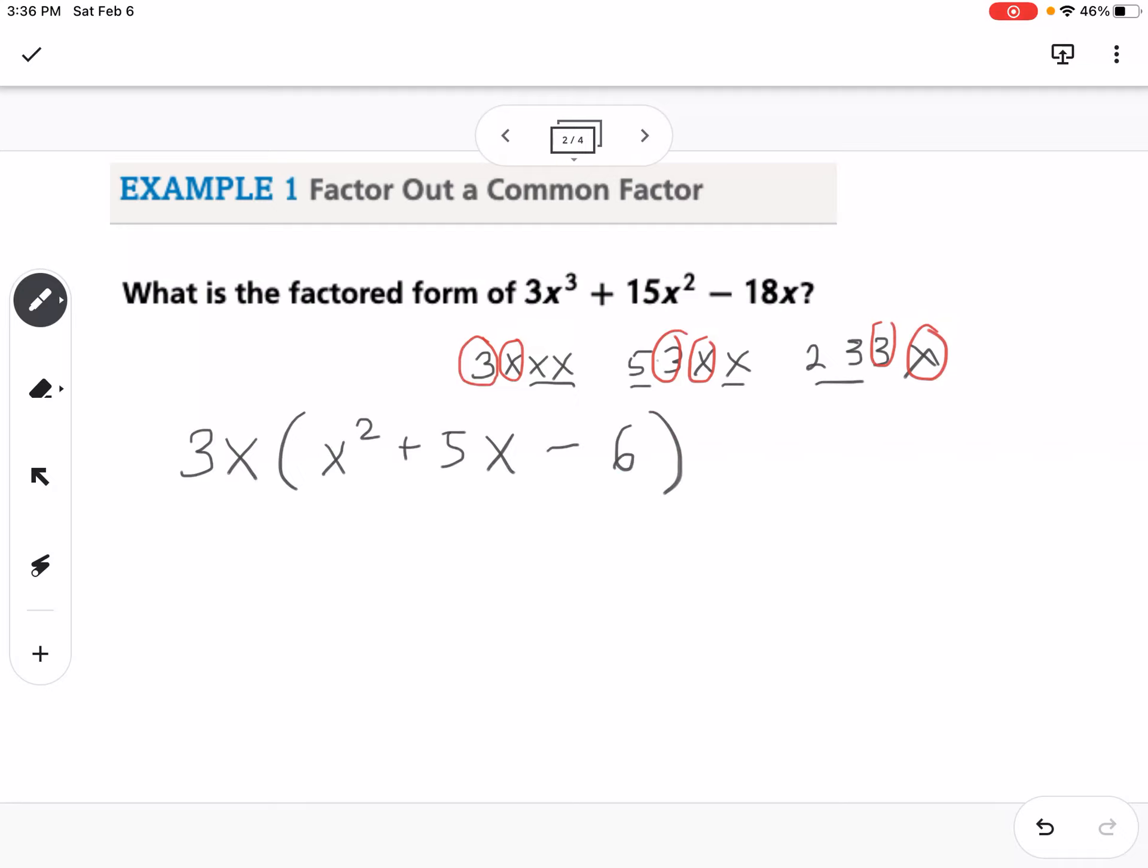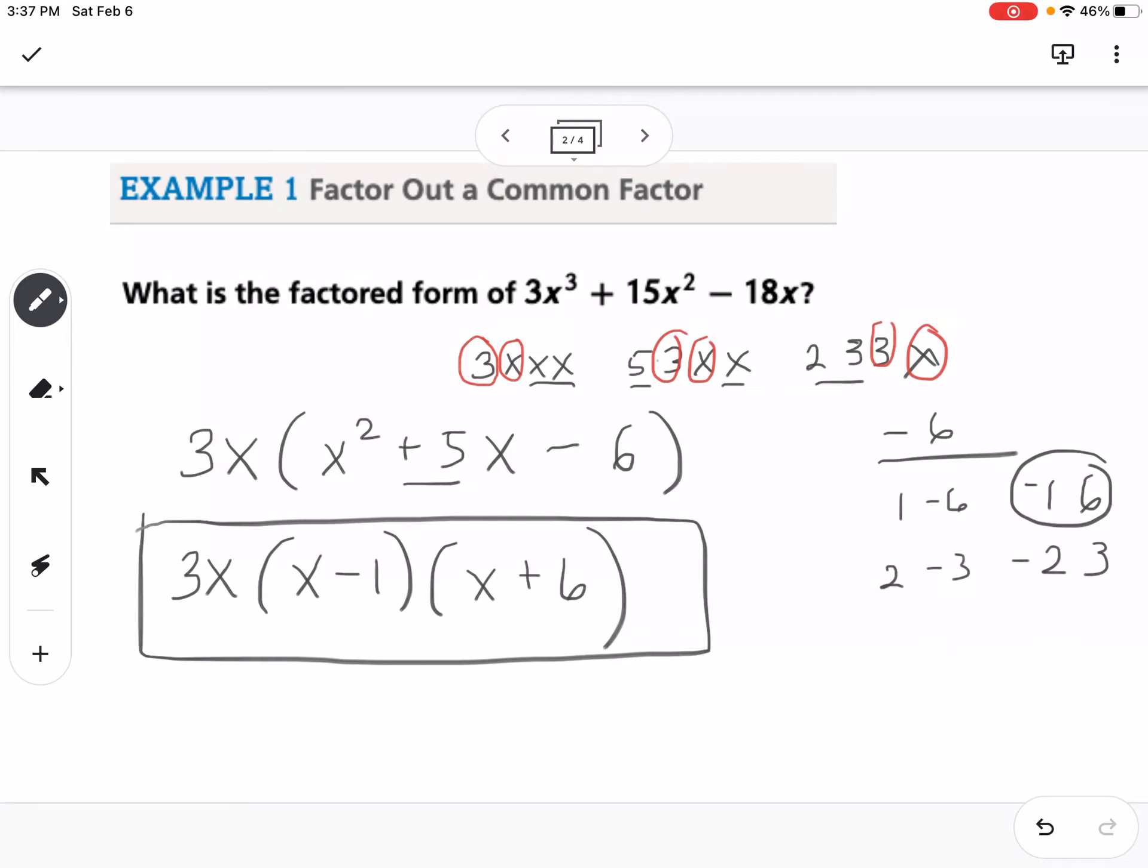So now what we did by factoring out that GCF is now we have a trinomial left inside the parentheses that we can factor just like we did in the last lesson. So we can say, what are my factors of negative 6, could be 1 and negative 6, or negative 1 and 6, and then 2 and negative 3, or negative 2 and 3. So if I want them to add to positive 5, I'm going to use those factors right there. So this would be 3x times x minus 1 times x plus 6. So that is my factored form of that expression.